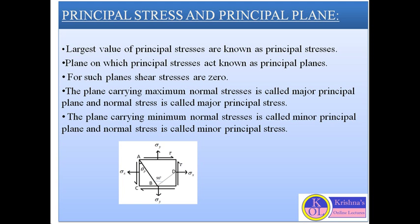The principal plane through a point within a material under stresses is a plane across which stress is wholly normal and no shear stress exists along the plane. The normal stress across the principal plane is called principal stress. The plane carrying the maximum normal stress is called the major principal plane, and the plane carrying the minimum principal stress is called the minor principal plane.